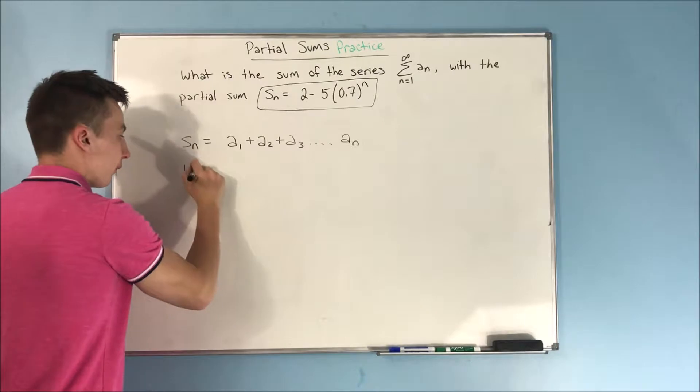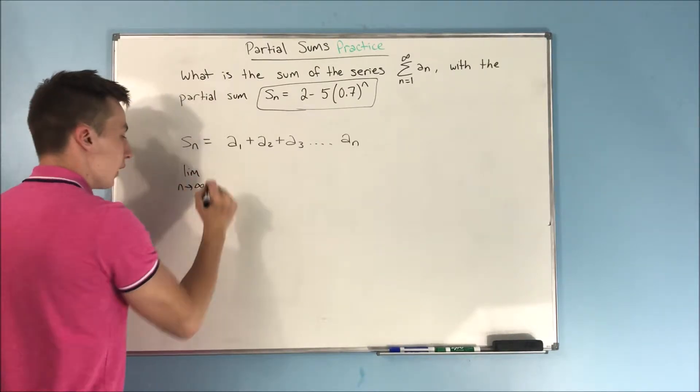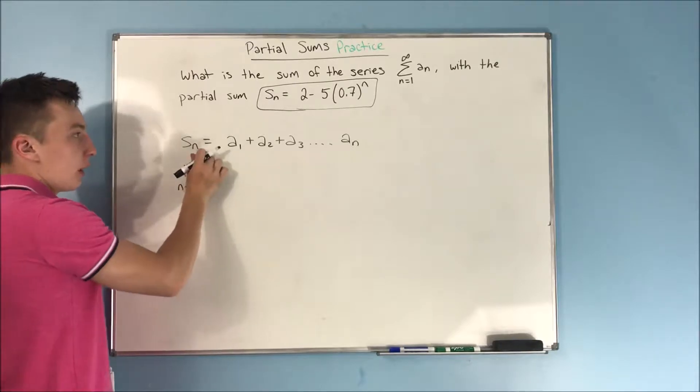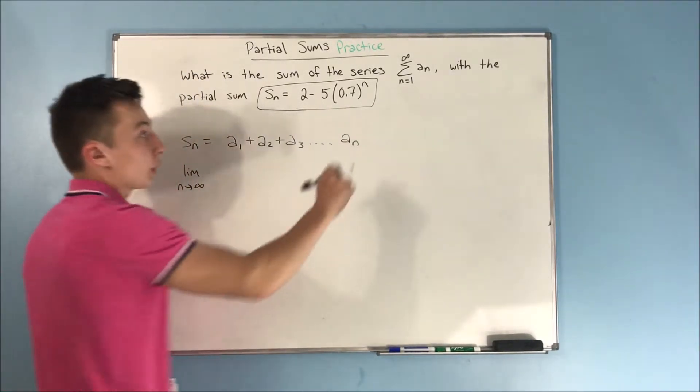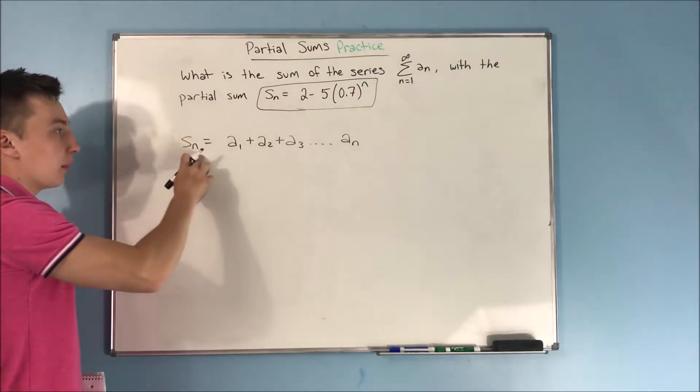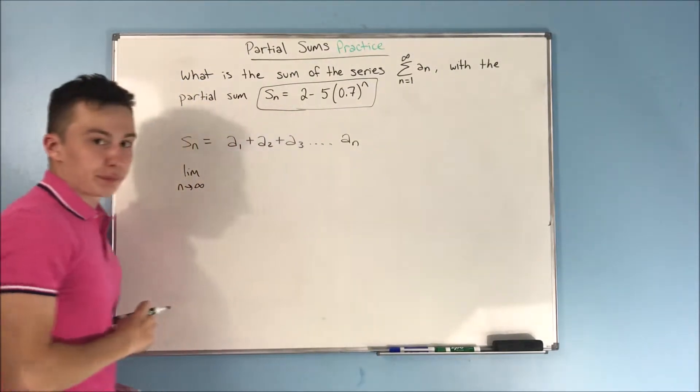So if we take the limit as n approaches infinity, then we are basically approaching the whole entire series. Because we're going from 1 to infinity, so we're approaching finding the sum of the whole entire series.